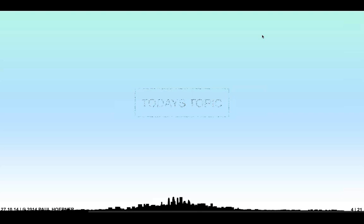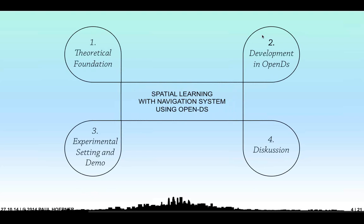Today's topic, as said before, is spatial learning with navigation systems using OpenDS. I've split the topic into four segments. First will be a short theoretical foundation or background to know what the topic is about — I think it's interesting to see how specific ideas can be addressed with OpenDS. Then, of course, the technical requirements and the following development we made in OpenDS. Then, probably the most interesting part: I'll show you the experimental setup and a short demo of the driving simulator and the laboratory we have here. And in the end, we'll have time for discussion.